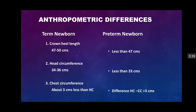In term babies the crown-heel length is 47 to 50 centimeters, while in preterm newborns the length is less than 47 centimeters. Head circumference ranges between 34 to 36 centimeters in a term baby, while in preterm babies it is always less than 33 centimeters. Chest circumference in term babies is around 3 centimeters less than head circumference, while this difference is more than 3 centimeters in preterm babies — meaning the chest circumference of a preterm baby is always more than 3 centimeters less than head circumference. However, these are not absolute for differentiation.